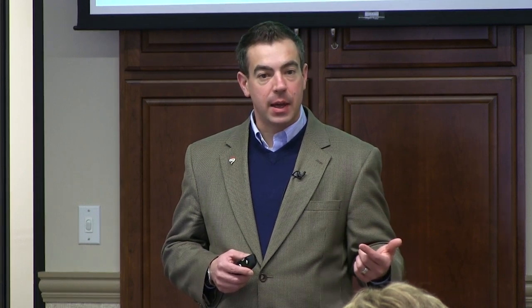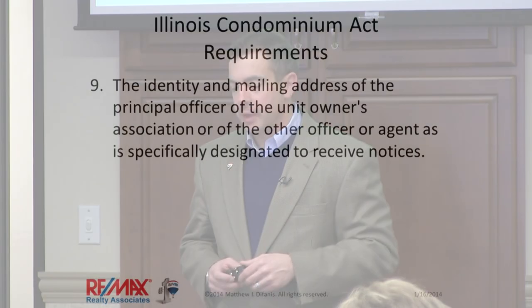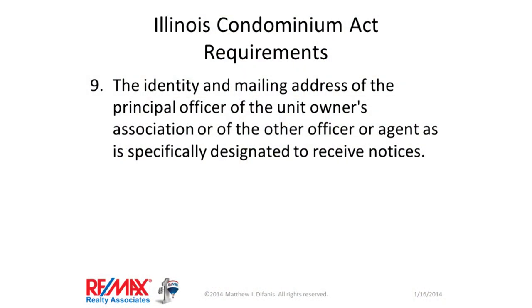You're not the one making representations or claiming to have a crystal ball about the association's finances, but you want to be on record providing every item the buyer is entitled to so the buyer can't claim a lack of due diligence. If you're on the listing side — there's actually a number nine: the identity and mailing address of the principal officer of the unit owner's association or of the officer or agent specifically designated to receive notices.